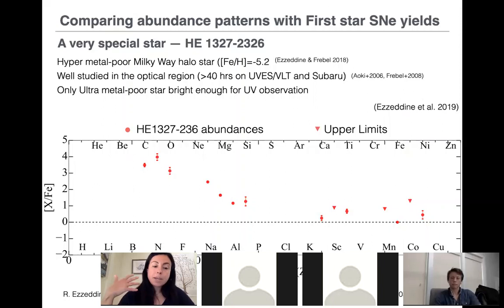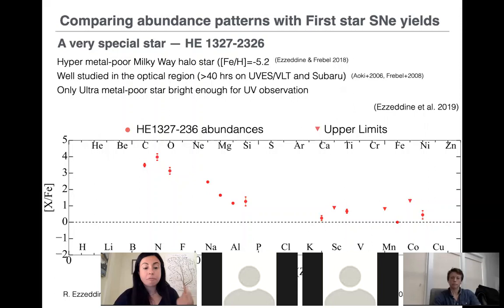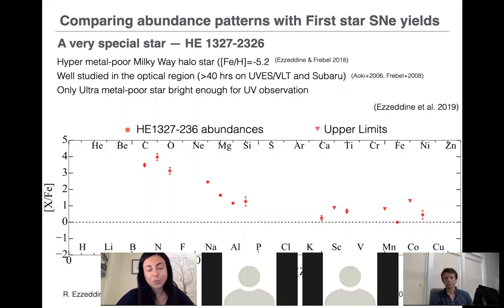To place constraints on first star properties, we measure the chemical compositions of the most metal-poor stars we can find, then fit these to models of first-star supernova explosions assuming a single progenitor or single event. We use these fits to infer the properties of the first stars. One of my favorite population II stars is HE 1327-2326 — not a very nice name, but very interesting, as I will explain.